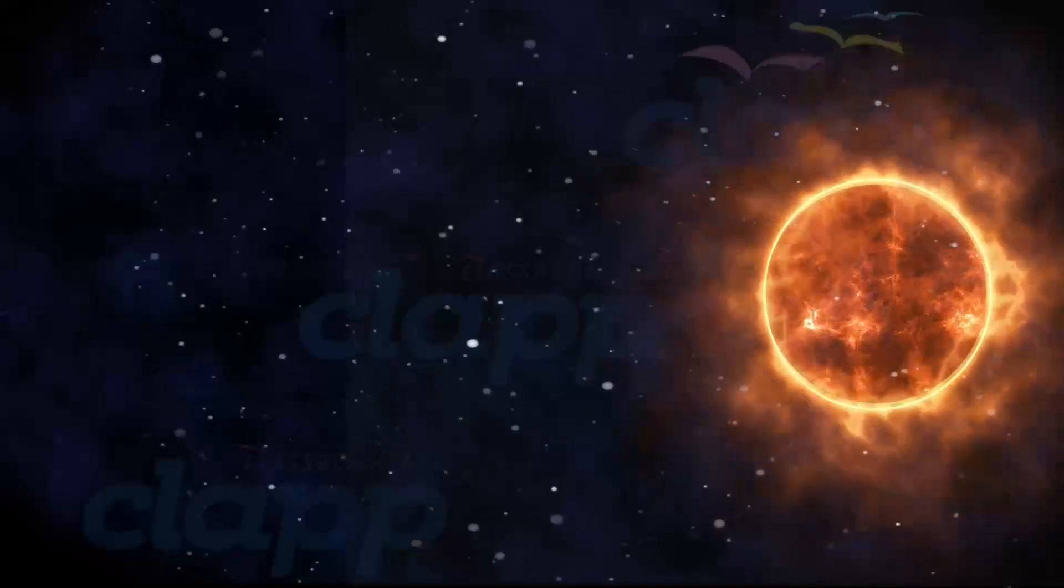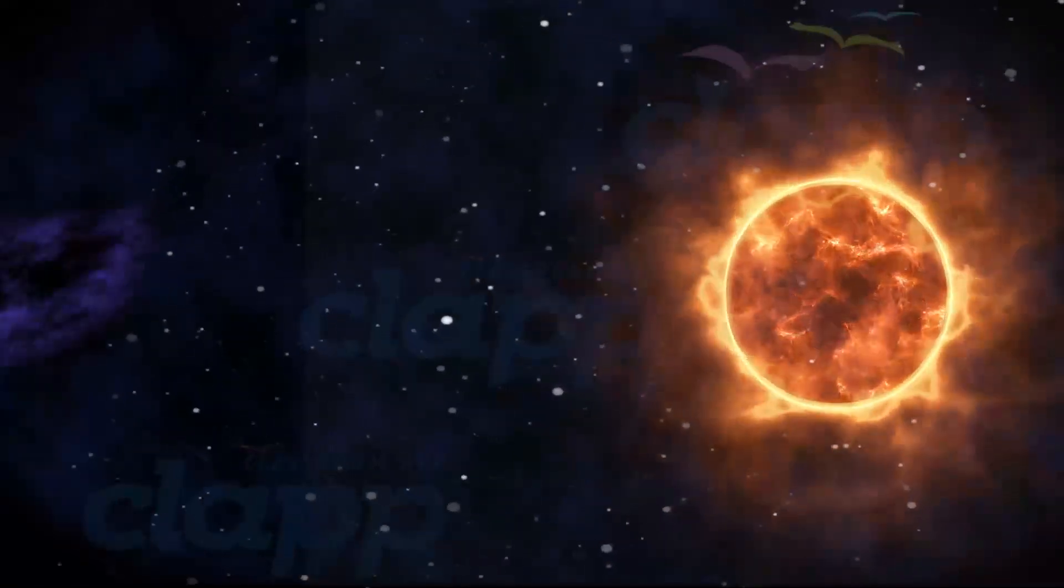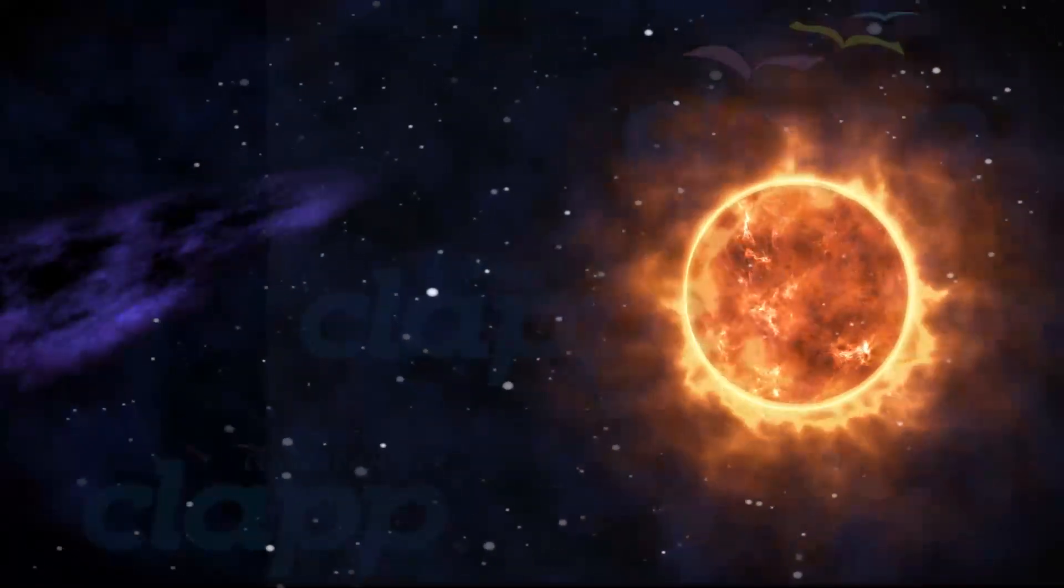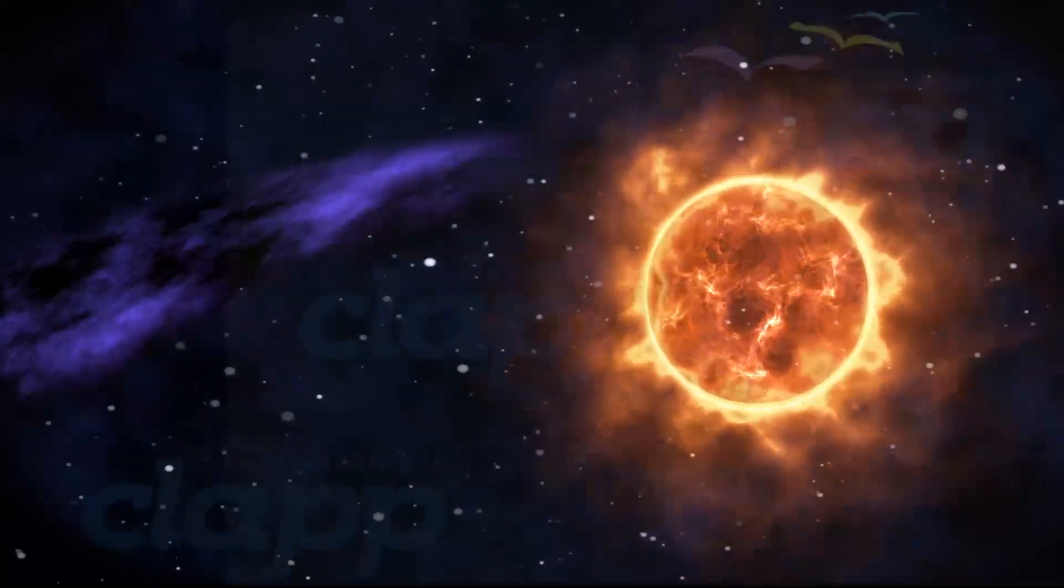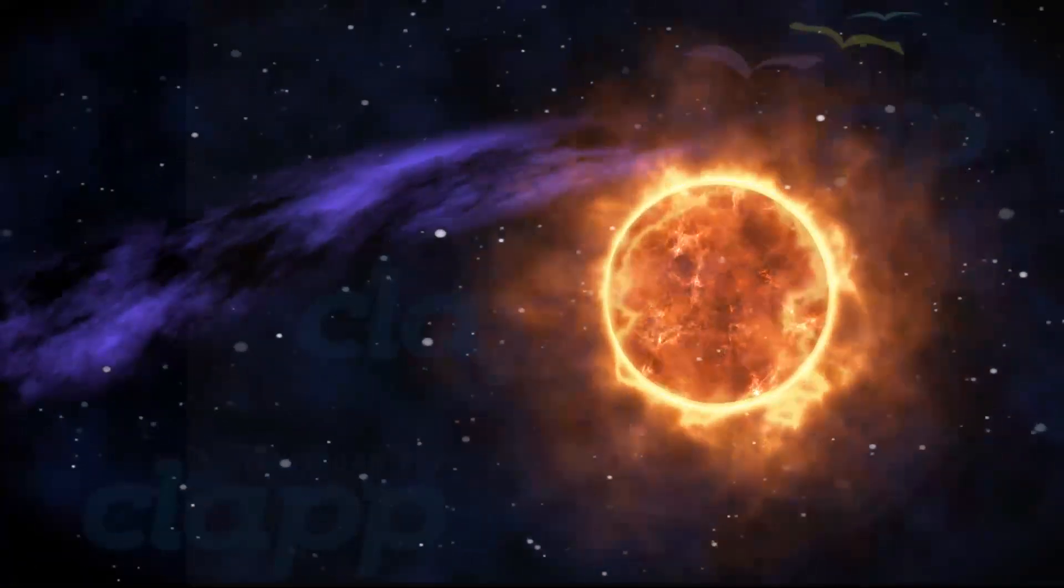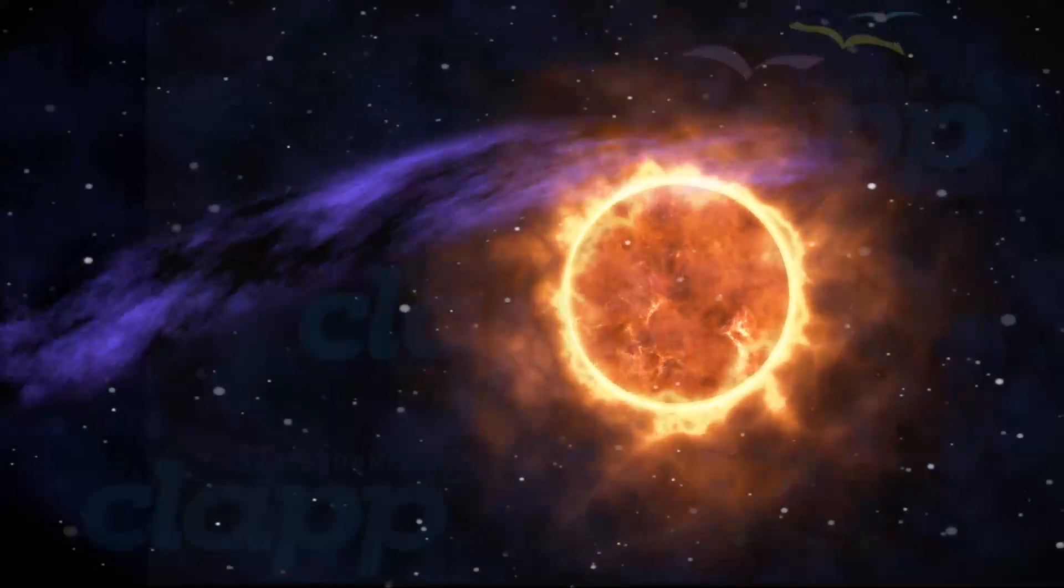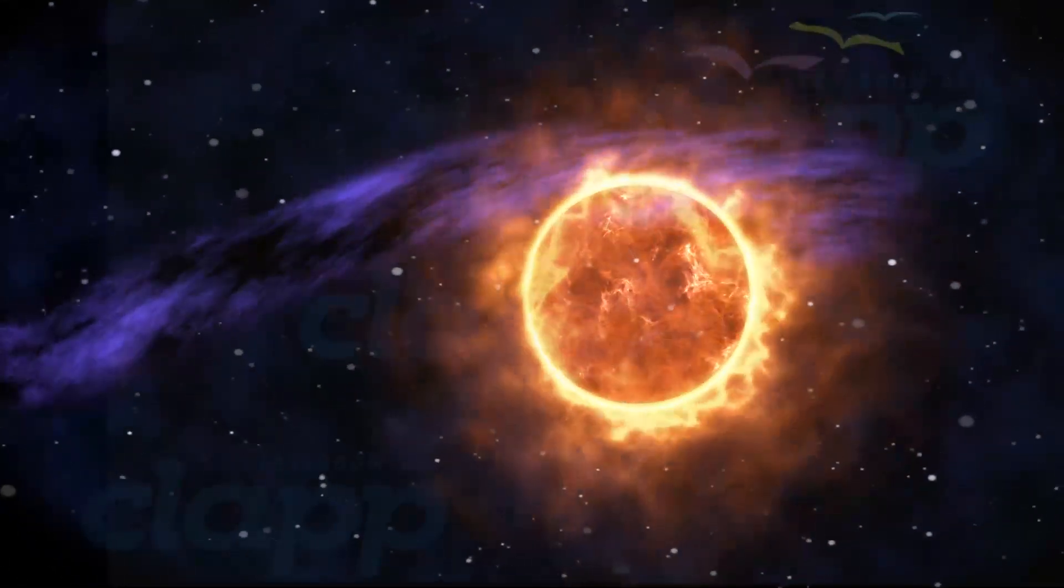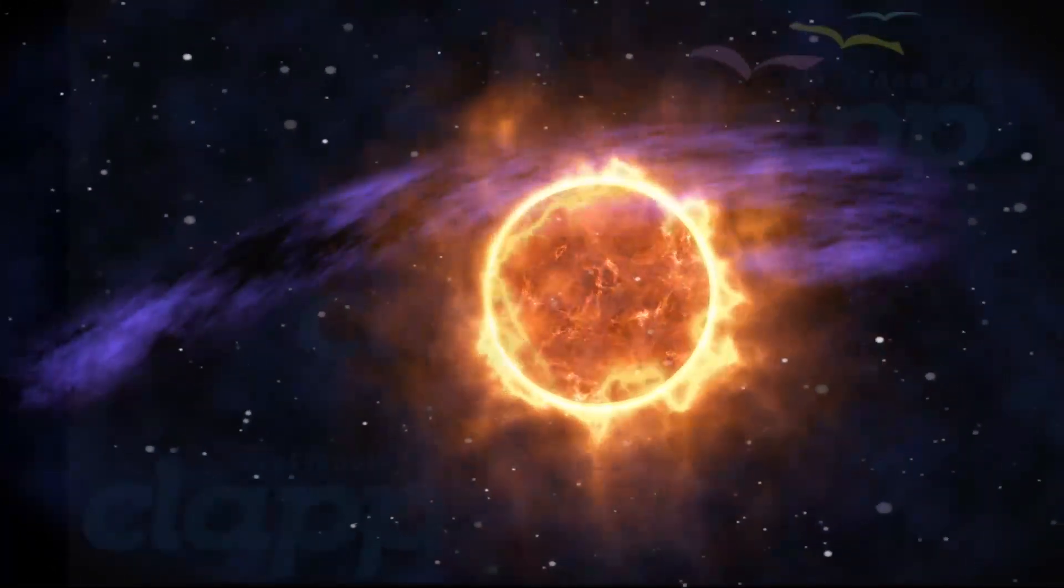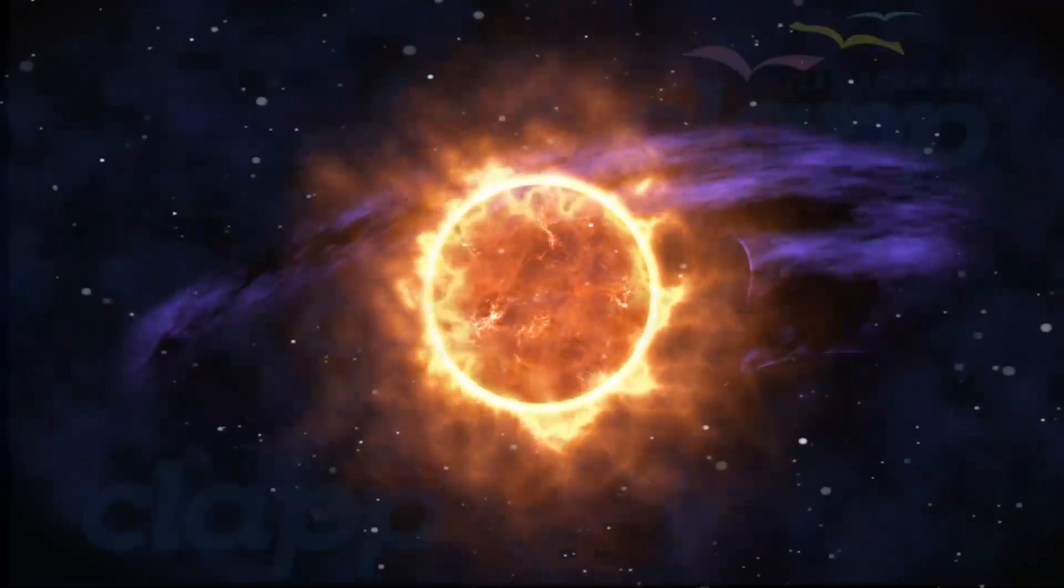Roughly three-quarters of the Sun's mass consists of hydrogen - 73% hydrogen and 25% helium, with much smaller quantities of heavier elements including oxygen, carbon, neon, and iron.